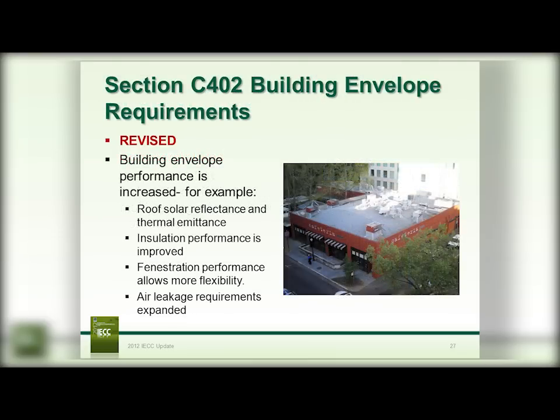Section C402 addresses the building envelope requirements, which have been significantly beefed up over the 2009 IECC. Roof solar reflectance and thermal emittance is now included. Insulation performance is improved. Fenestration performance actually allows more flexibility, and the air leakage requirements have been expanded.